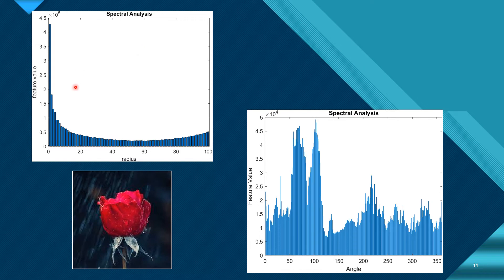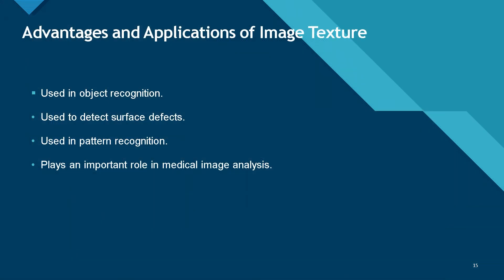This is the graph for radius, and this graph for theta is 0 to 360 degrees. As you can see the values in the x-axis 0 to 360 degrees, and in the graph we are going to take 0 to 100. These two spectrums, this spectral analysis, are given for this image. We will get to know about the advantages and applications of the texture using image texture.